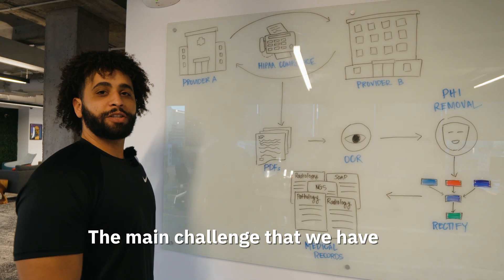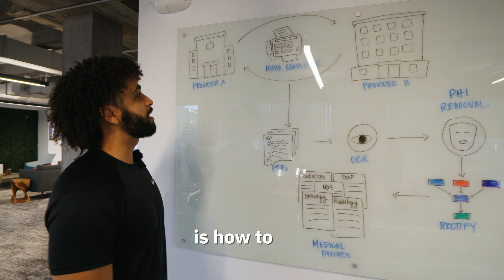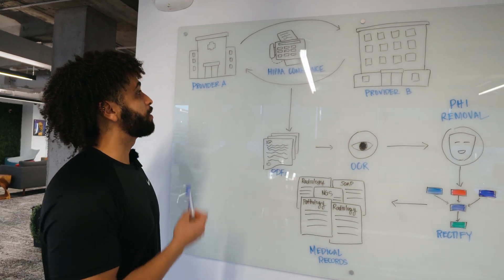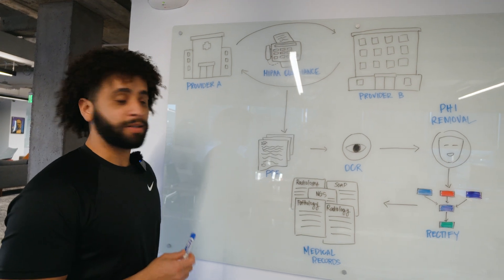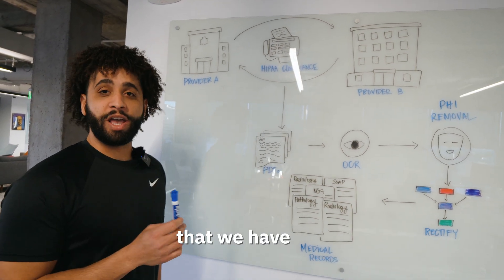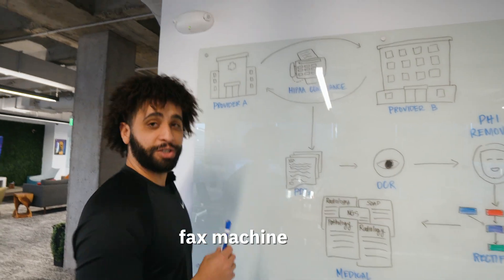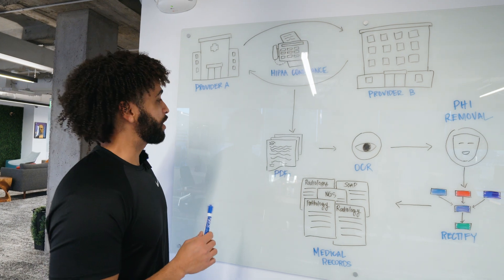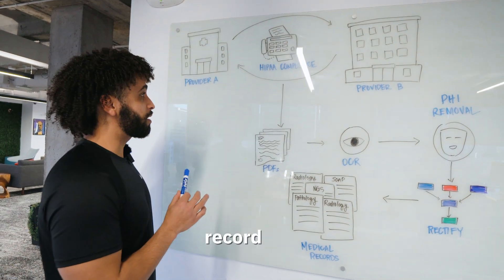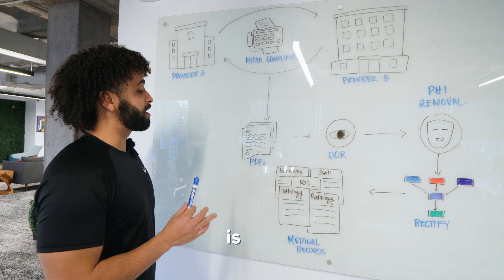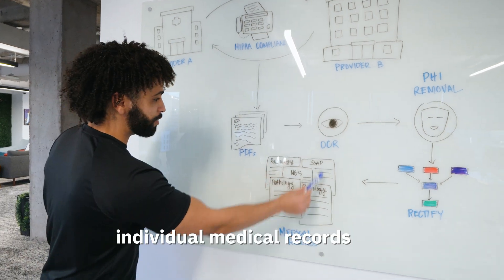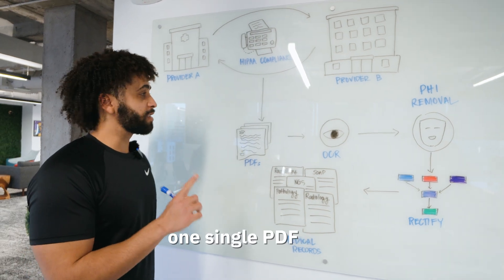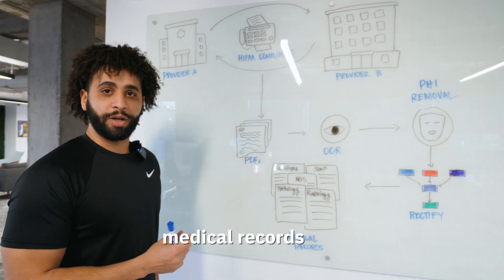The main challenge that we have today in the medical domain is how to efficiently communicate between providers and share information while maintaining HIPAA compliance. The easiest, fastest, and cheapest way we have today is to use a fax machine. However, there are two main problems: first, the medical record becomes an image; second, instead of having individual medical records, you now have all medical records combined in one single PDF with hundreds of records.